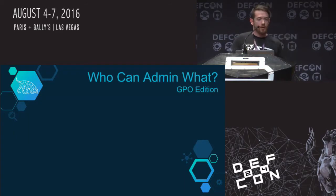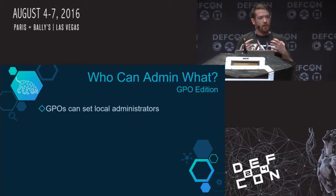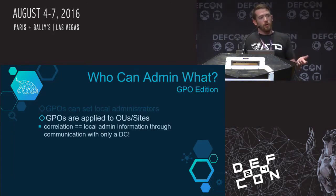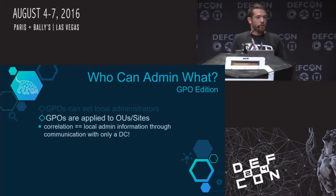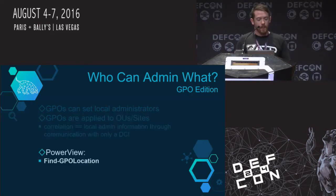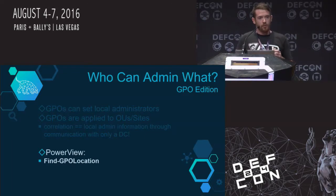We also have a newer method to gather the same information using Group Policy Objects. GPOs are collections of settings applied to computers — some of these settings define who's in the local administrators group, either through restricted groups or group policy preferences. GPOs are linked to OUs and sites, so if we enumerate all GPOs and all domain containers and do some correlation, we get a mapping of who can administer what machines through GPO. The real advantage is you're only communicating with the domain controller through LDAP — not sending a single packet to any other machine. The PowerView function is Find-GPOLocation.